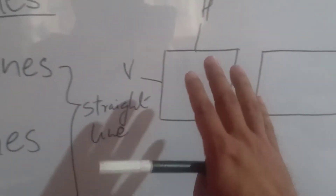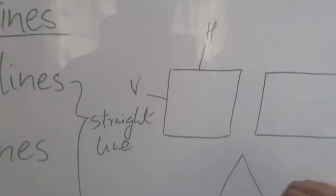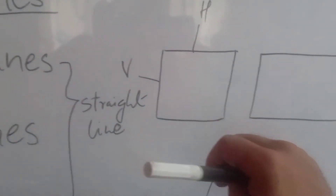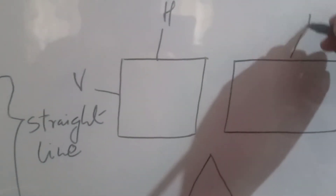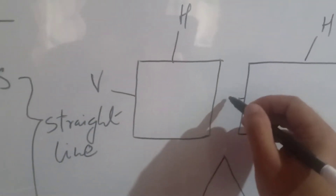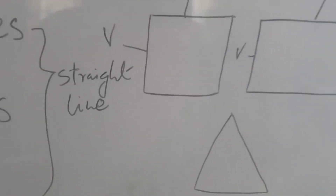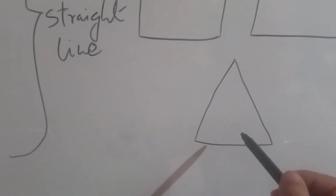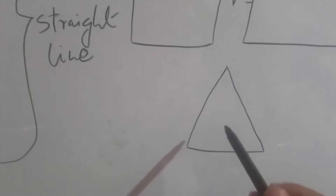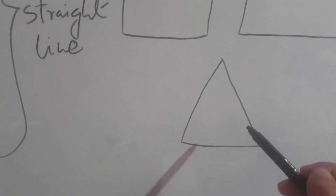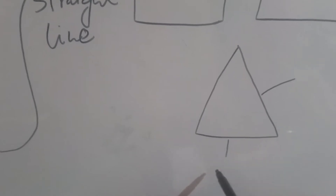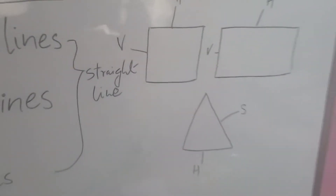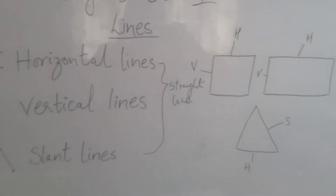By connecting lines you get different shapes. Likewise, in a rectangle there is also a horizontal line and a vertical line. In a triangle shape you will find a slant line and a horizontal line.